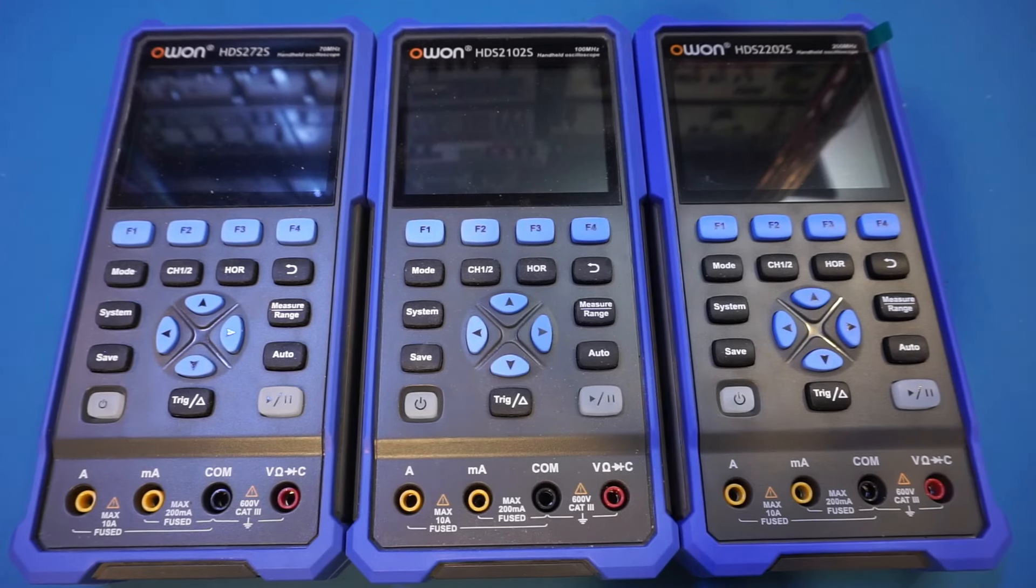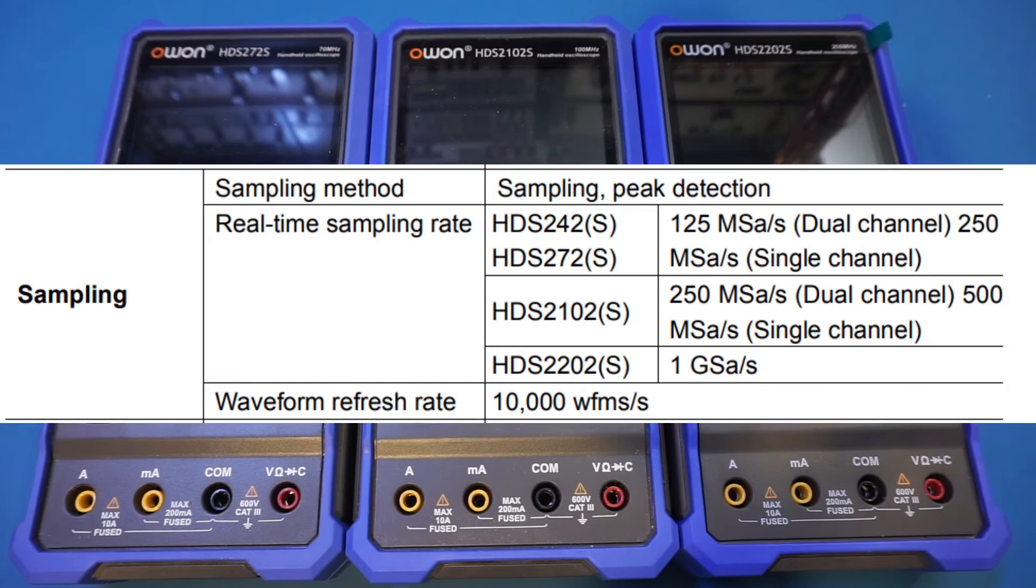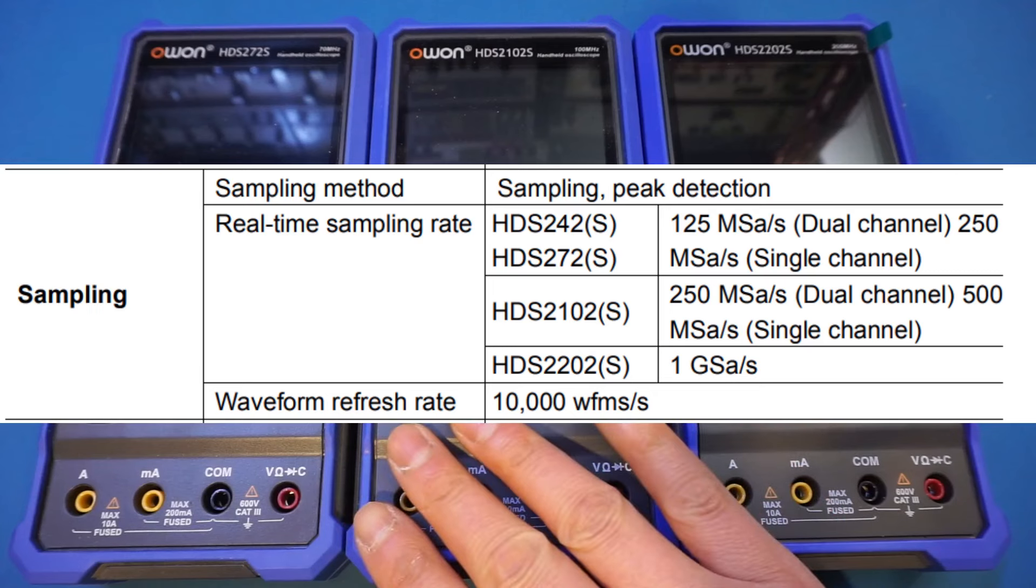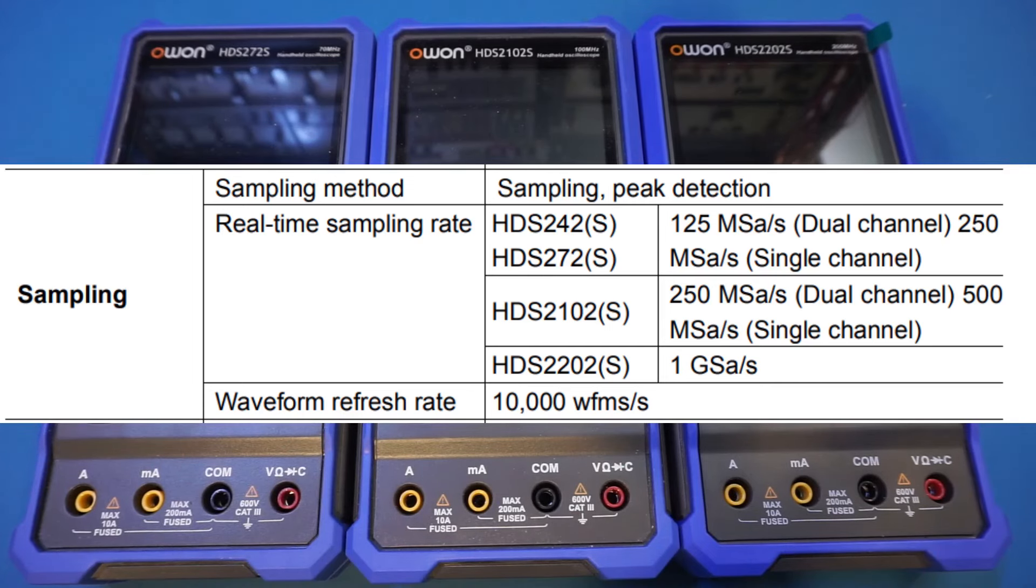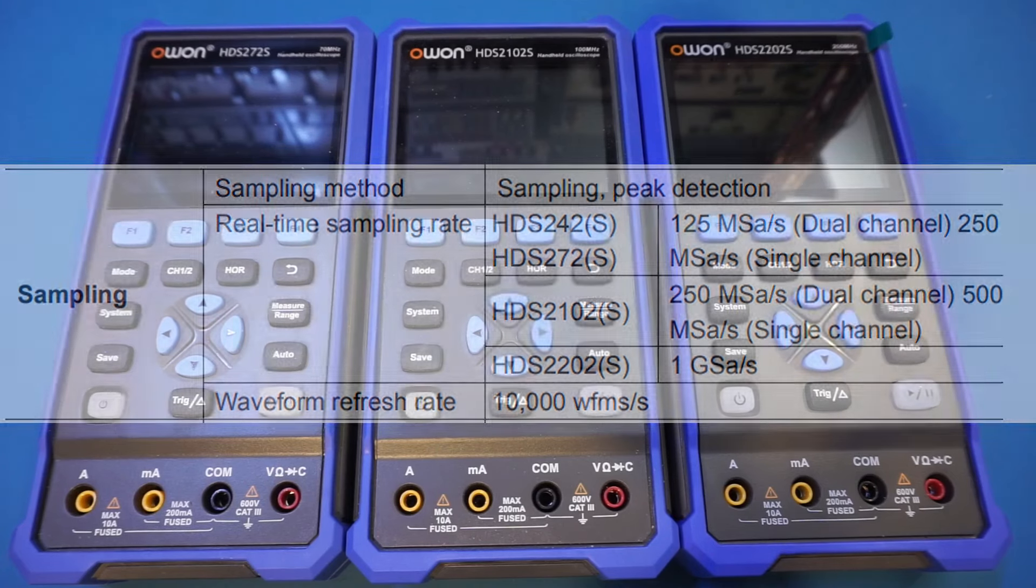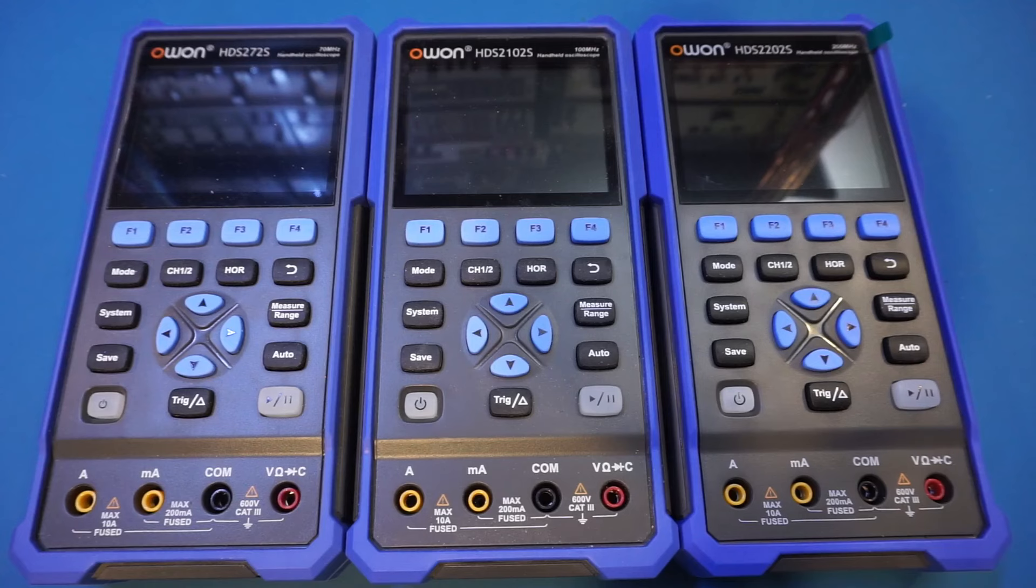While combing through the specs, one thing jumped out at me, and that is the real-time sampling rate for this scope. The sampling rate for the HDS2202 has been increased to 1 gigasample per second, which doubles the sampling rate of the 2102, and quadruples the sampling rate of the 272. And also, the sampling rate for the 2202 is at 1 gigasample per second, regardless of whether it is in single-channel or dual-channel operation. This is really unusual, as most scopes multiplex the front-end sampling ADCs across multiple channels. You typically see the sampling rate halves when you enable both channels in a two-channel oscilloscope. And this is exactly what we see here for all the prior versions, but not the 2202.